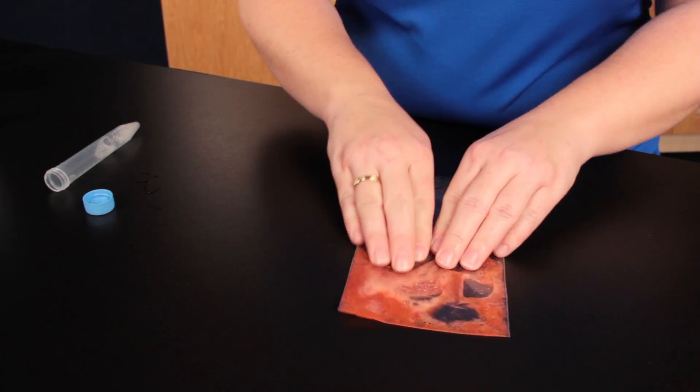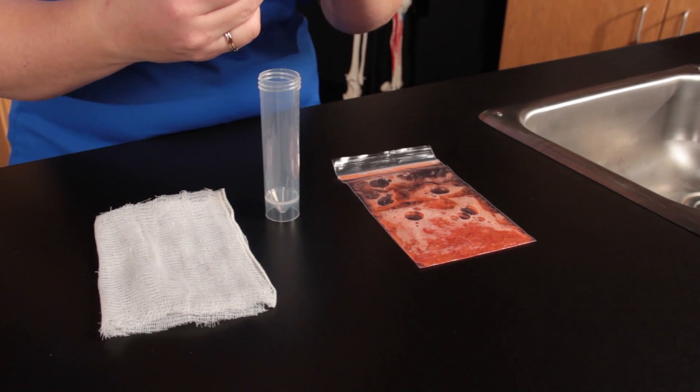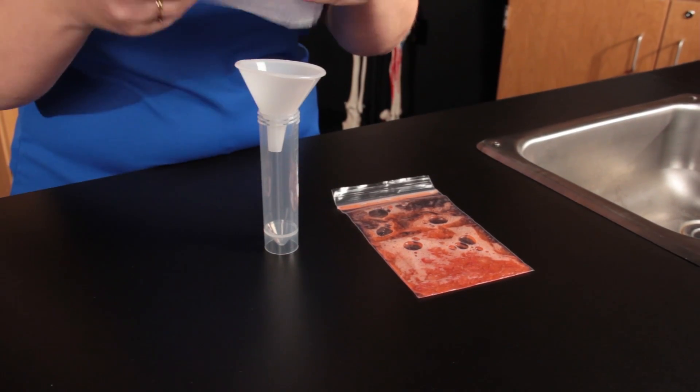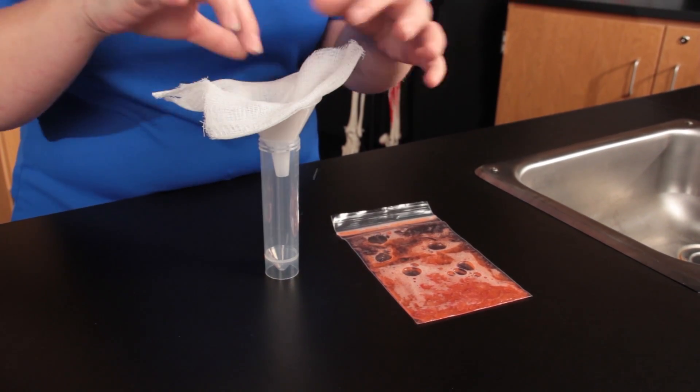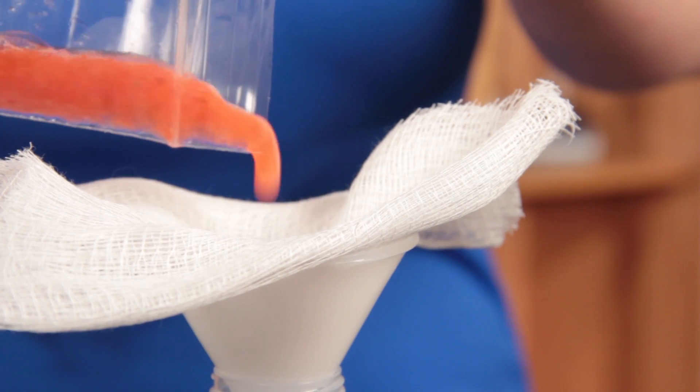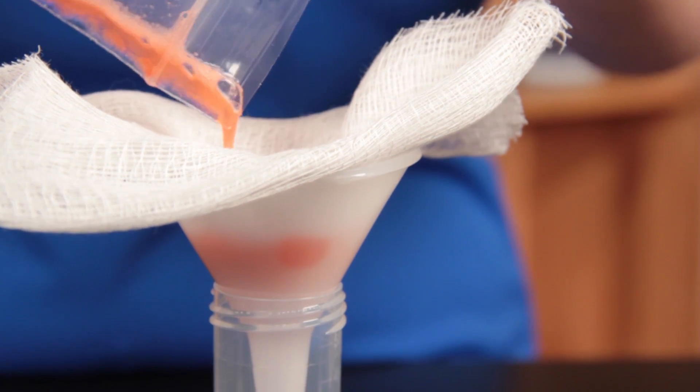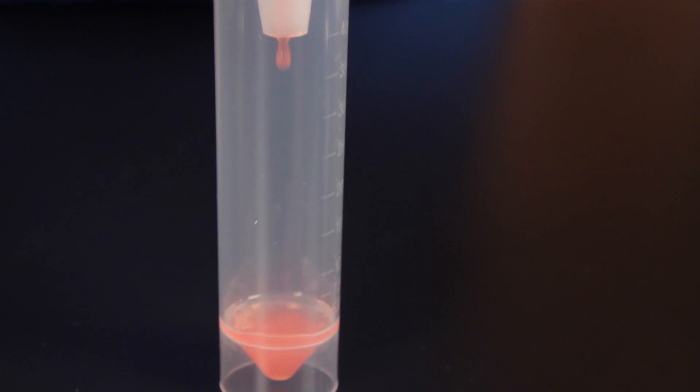To filter, place the funnel in the cup, then line the funnel with one or two layers of cheesecloth. Now pour the mixture over the funnel and allow it to filter into the vial. Discard the cheesecloth into the plastic bag.